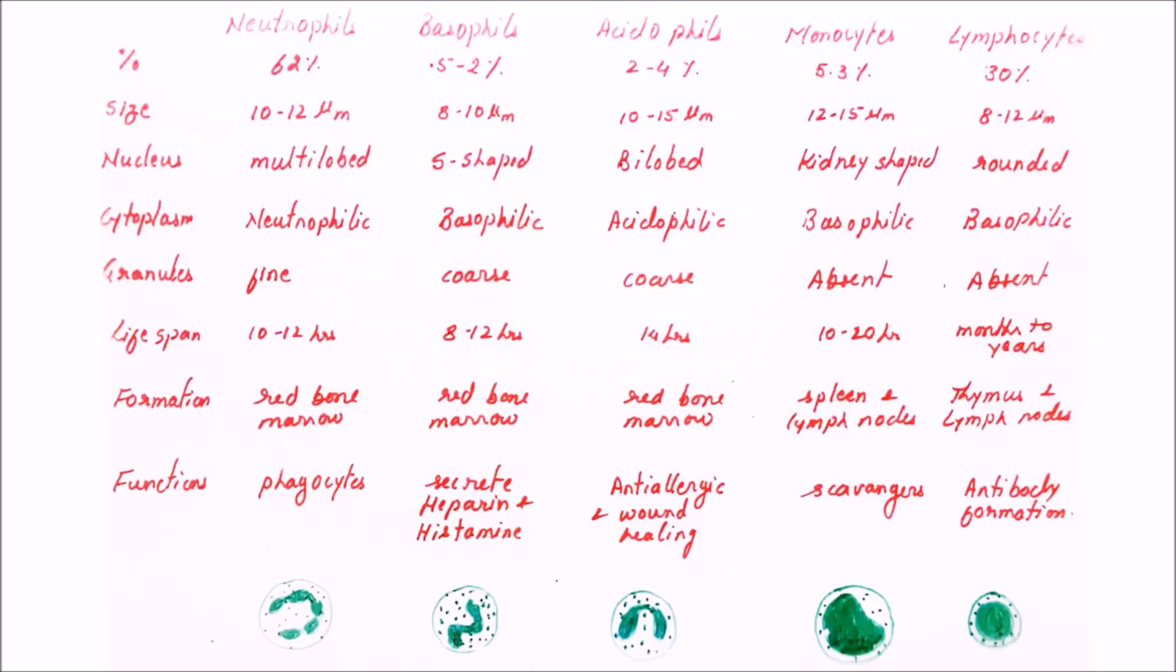Coming to the second one, that is basophils: they secrete heparin, which is an anticoagulant, and histamine, which is released as a result of allergic reaction. They also secrete one more substance which is not mentioned in the table here: serotonin, which is a vasoconstrictor. Now coming to acidophils or eosinophils and their functions.